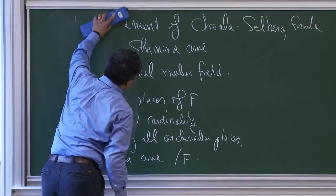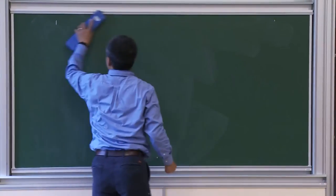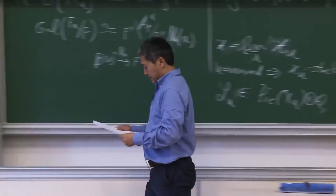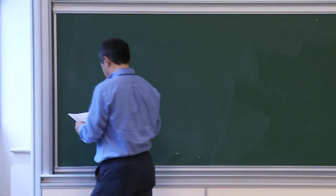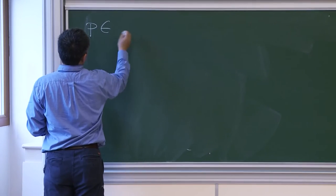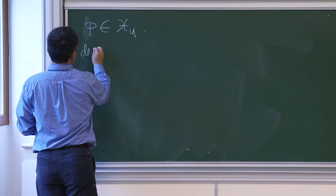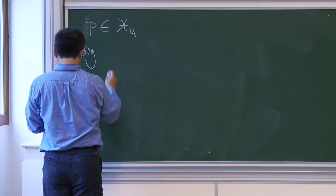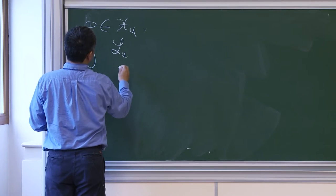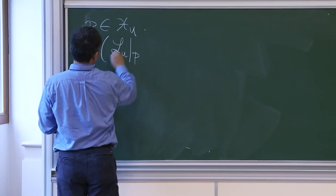So the idea for Shimura curves is: construct the integral models, also construct the Hodge bundle. Then you can define the Faltings height. If P is any point of X(U), you can define the degree of the Hodge bundle L(U) at P. If you have a compatible family u_1 → u_2, the Hodge bundle pulls back compatibly, so the height computed at either level is the same.